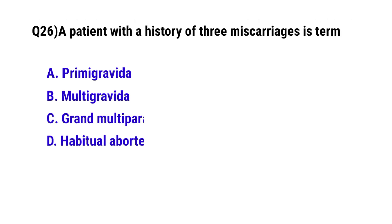Question No. 26: A patient with a history of three miscarriages is termed as? The correct option is D: Habitual aborter.